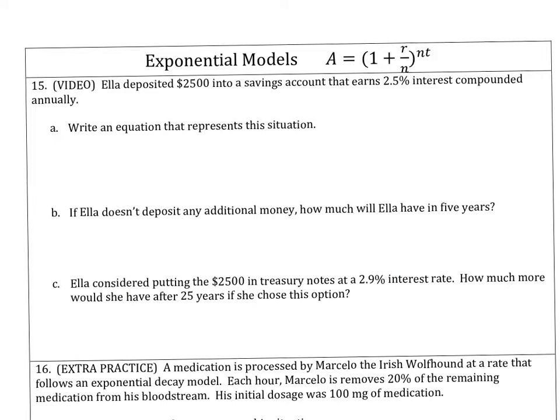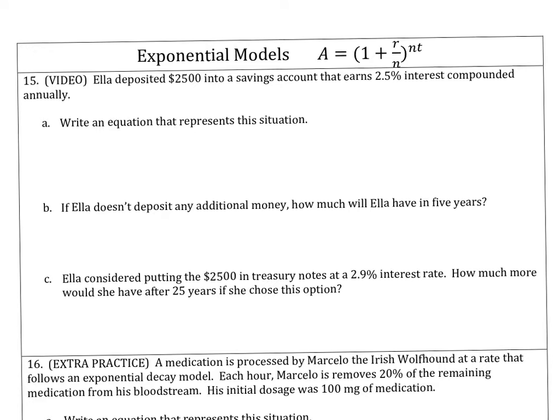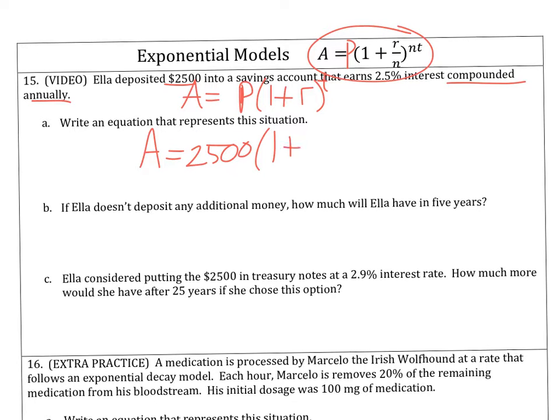And finally, we've got some exponential models. I've got Ella depositing some money into an account. And what we're going to do is to use our exponential general equation, which tells us how to work with this. In both the problems on here, we're compounding annually or at a normal rate. So, we're just going to be looking at A is equal to the principle times 1 plus r to the t. And in this particular equation, we've got the principle of $2,500. That's how much we start with. So, that's $2,500, 1 plus, and 2.5% is 0.025 as a decimal to the t power.